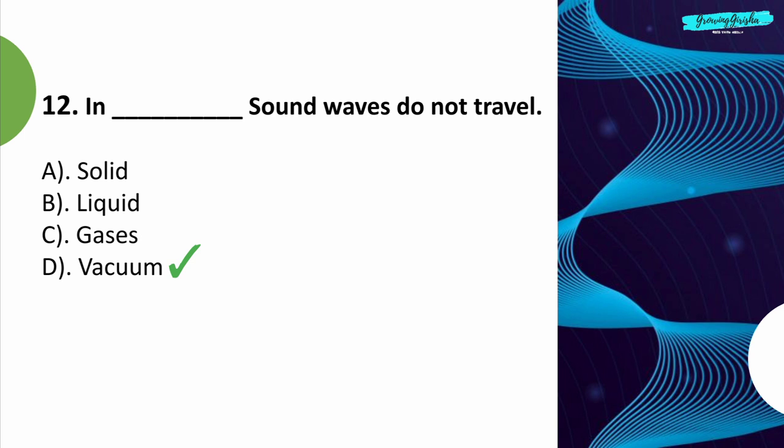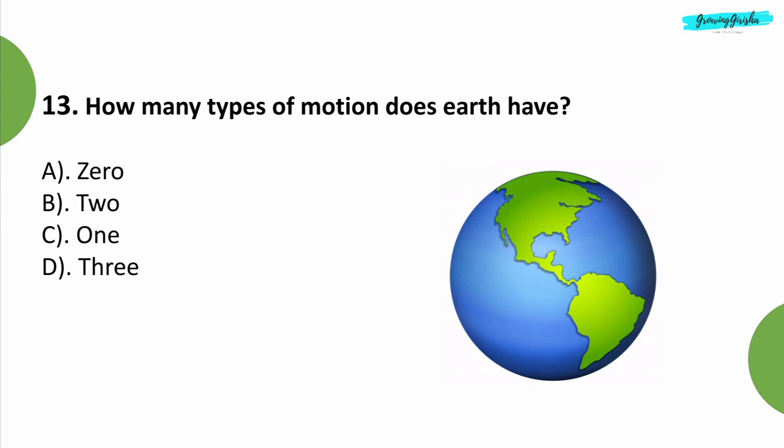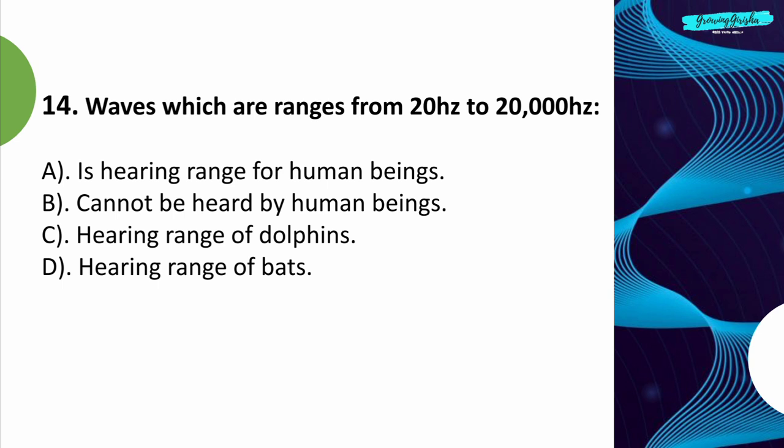Question 13: How many types of motion does Earth have? Option B: 2. Question 14: Waves which range from 20 Hz to 20,000 Hz. Option A: Is the hearing range for human beings.